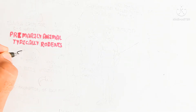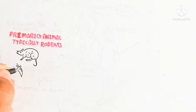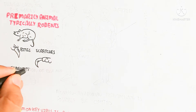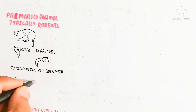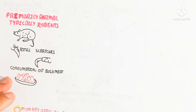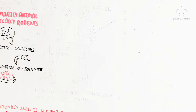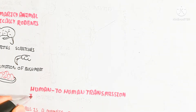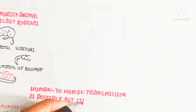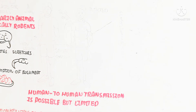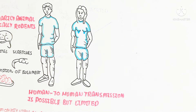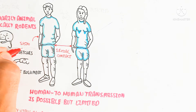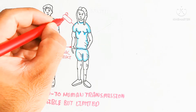Transmission from rodents to humans can occur through bites, scratches, and consumption of bush meat. The illness typically lasts for two to three weeks, after which recovery can occur. Human-to-human transmission is possible but limited.